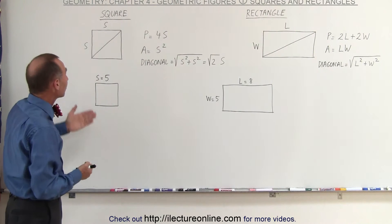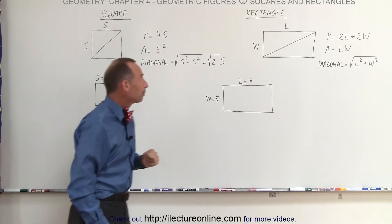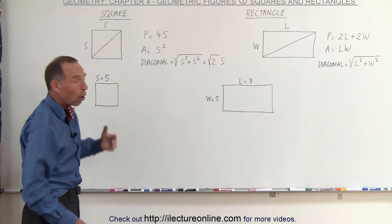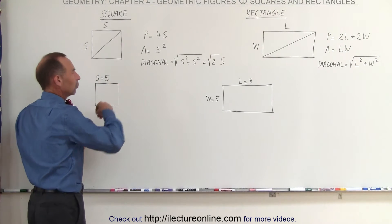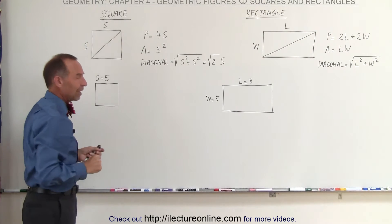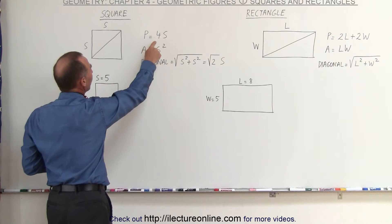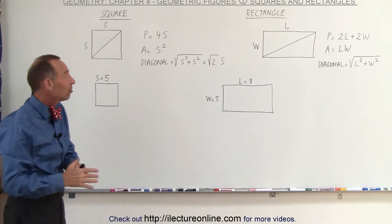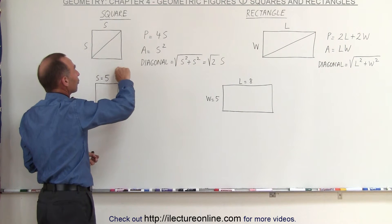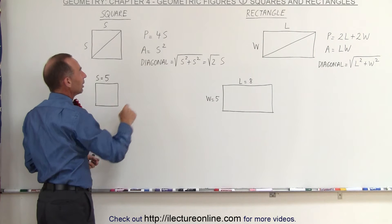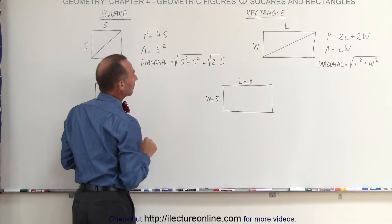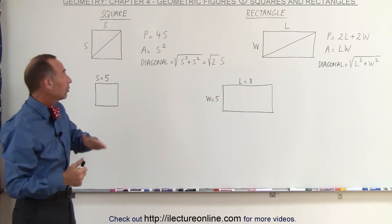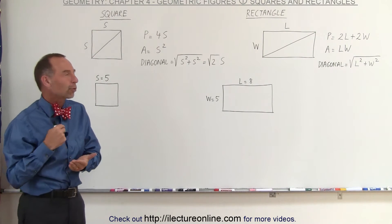Starting with the more common figures, we have a square. To find the perimeter — I use P for perimeter and A for area — since all four sides are the same and all four angles are the same, that's the definition of a square. The perimeter is simply four times the side, and the area is the side squared. To find the diagonal, we use the Pythagorean theorem: the diagonal equals the square root of two times the side. The square root of two is approximately 1.4, so the diagonal is approximately 1.4 times the length of a side.